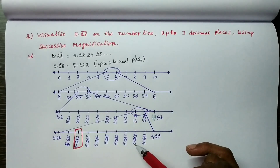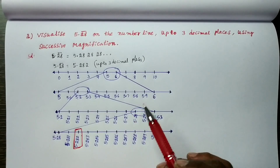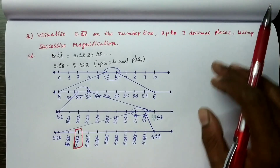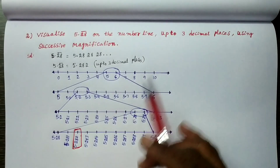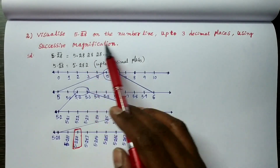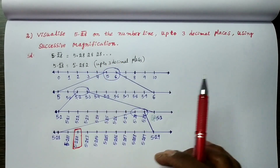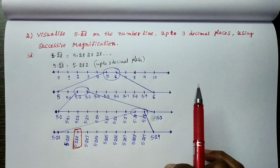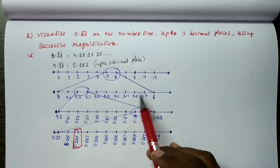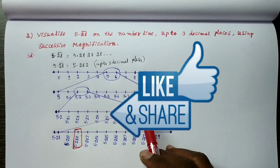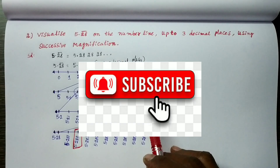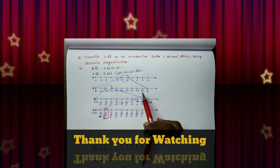This problem is also completed. This is the way to represent decimal numbers on the number line. If you like this video, please like it and share it with those who need math basics, and subscribe for more videos. Thank you for watching.